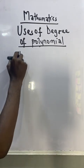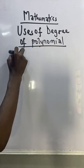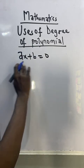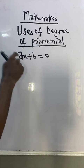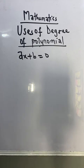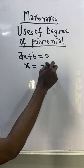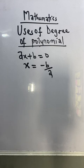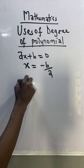Assuming we have a linear polynomial or linear equation — for instance, ax plus b equal to zero — this is a general linear equation. This is going to produce only one root. At the end of the day, if we solve this, we get x equal to minus b over a.